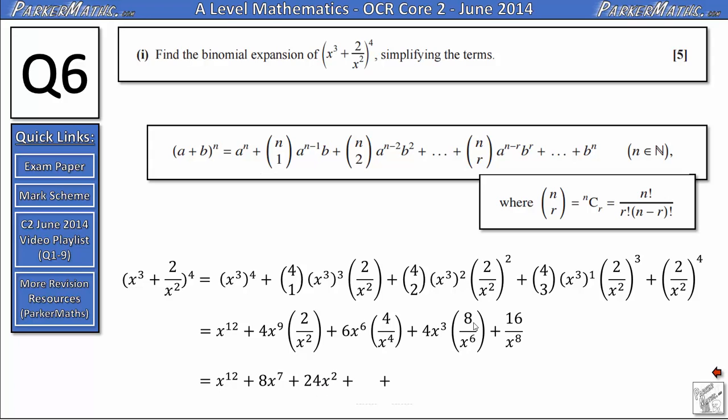For the next term we've got 4 multiplied by 8 is 32. And we've got x cubed divided by x to the power of 6 which is x to the negative 3, or just 32 over x cubed. We don't need to do anything with the last term because that's already simplified, which gives us 16 over x to the power of 8.